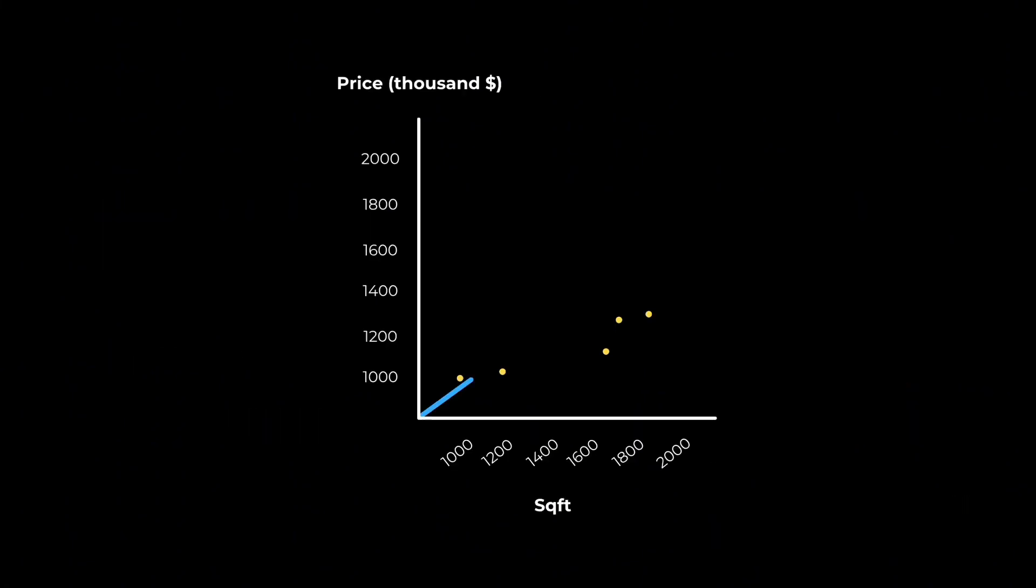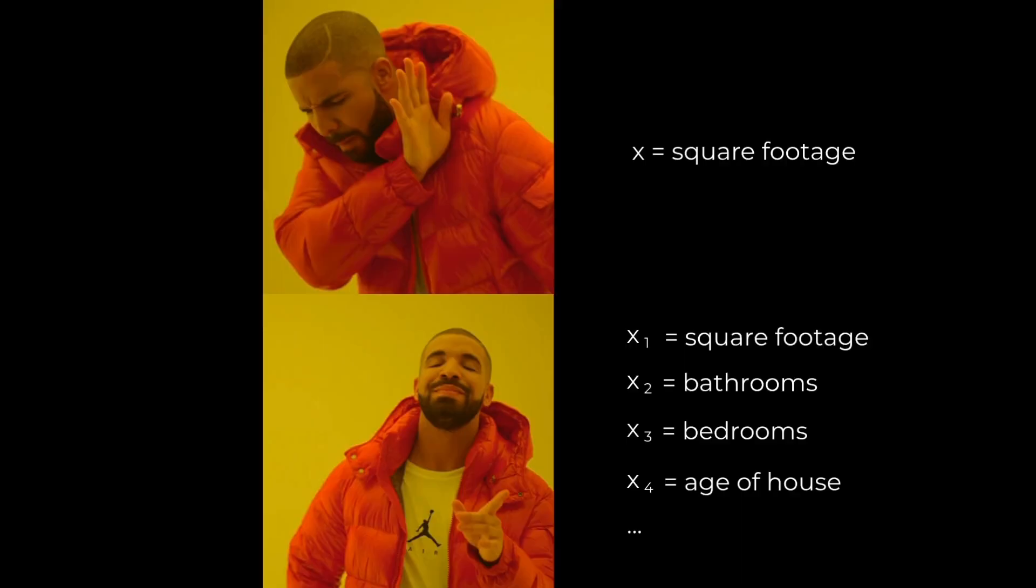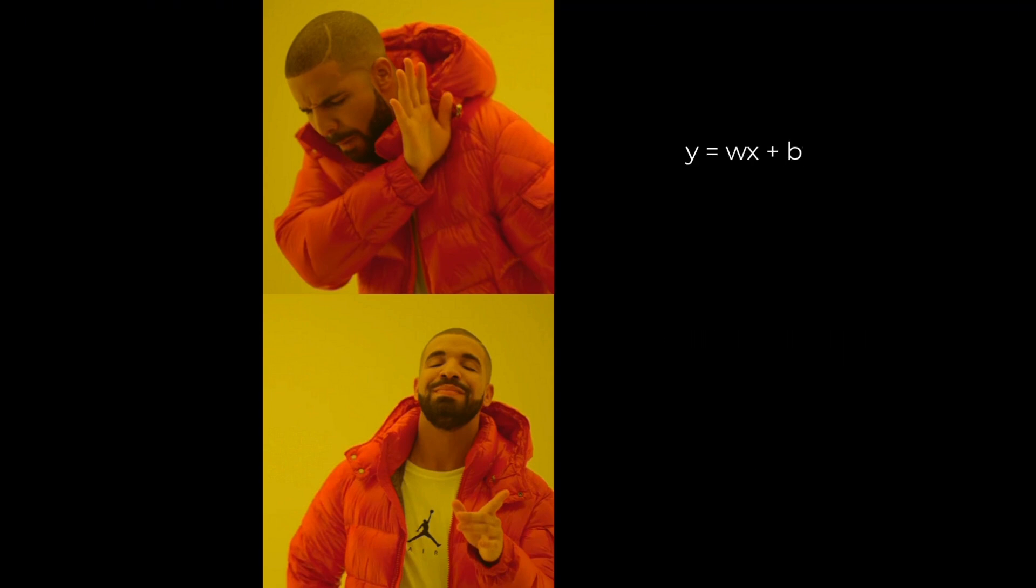So now you know how labeled data, cost functions, and gradient descent help us build a model that can predict house prices given some input, like square footage. But isn't our example too simple? Obviously, Zillow doesn't just use one feature to predict house prices. It's common for AI models to take in hundreds or thousands of features to make predictions. Well it turns out, if we add more features, the concepts we learn are basically the same. The math is just slightly different. Instead of a model that looks like this, with one weight and one feature, you get a model that looks like this, where x1 is the first feature, x2 is the second feature, and so on, and w1 is the weight for the first feature, and w2 is the weight for the second feature, and so on. You can simplify this by saying x is equal to a vector containing all these features, and w is equal to a vector containing all the weights for each feature.